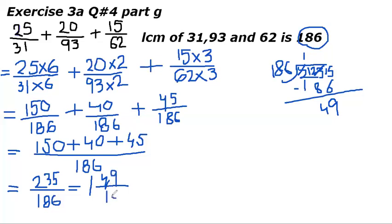We have changed this improper fraction into whole number fraction to make the fraction more meaningful. 1 whole number 49 upon 186 is the answer. Now students listen that in your book at the end where the answers are written they have written 13 whole number 11 upon 18 that is wrong. This is right answer 1 whole 49 upon 186.